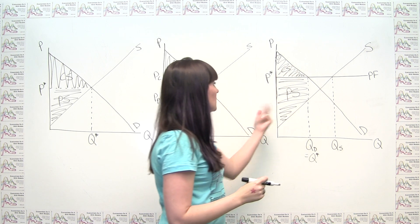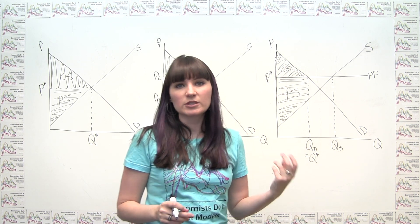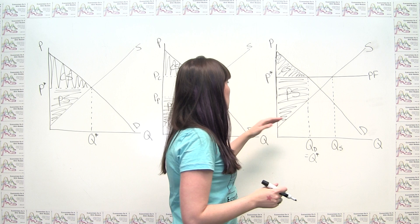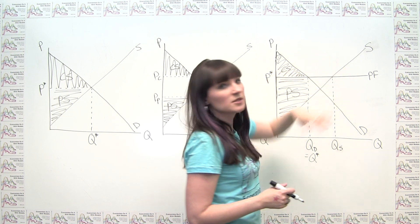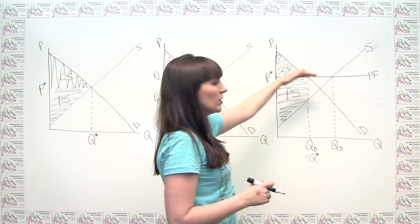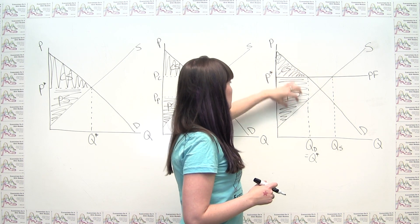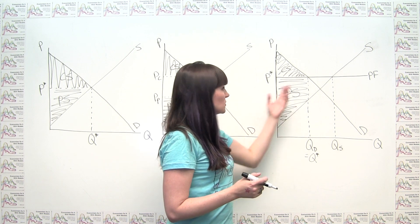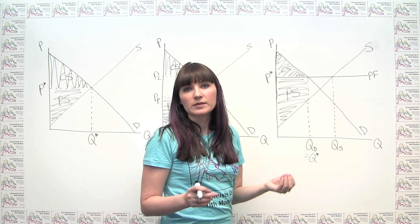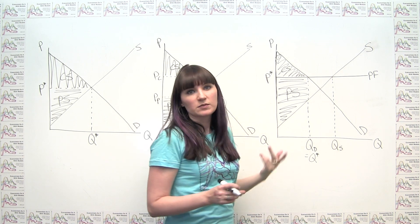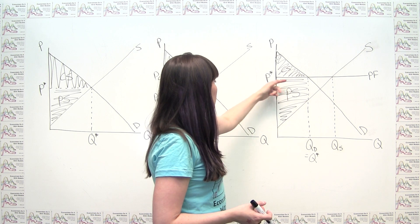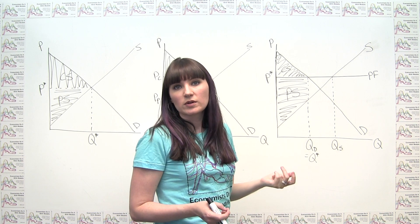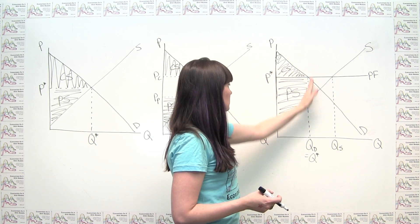One potential source of confusion: we're using the word 'surplus' in two different contexts. We can talk about a surplus meaning literally extra stuff left over in a market when, for example, we have a price floor. Or we can talk about surplus as the value created for consumers or producers in a market. These are obviously different concepts — it should be clear from context which one is being discussed. This price floor example is also where all three rules become relevant, since the result is not a triangle.